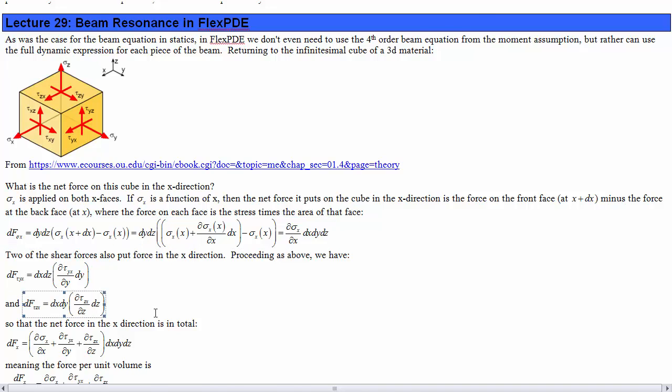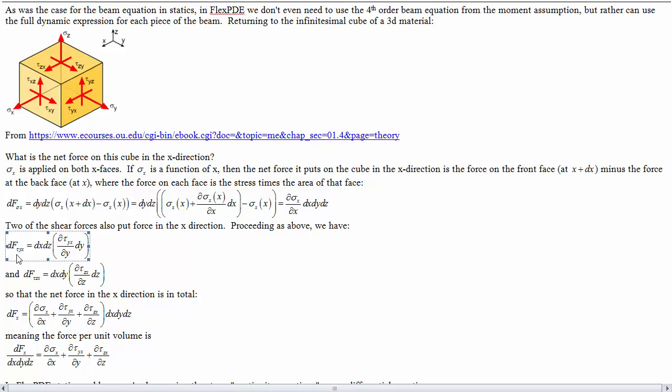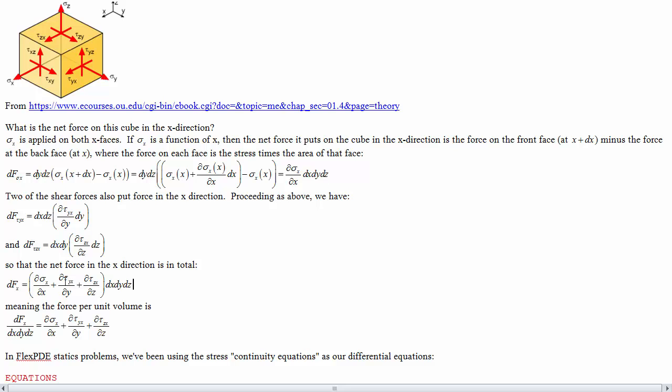Proceeding the exact same way for the shear stresses, we can come up with the force in the x-direction from tau yx from this shear force, and similarly for z. So in total the force is del sigma x by del x plus del tau yx by del y plus del tau zx by del z times the differential volume of the cube, which means that the force per unit volume is the sum of these derivatives.